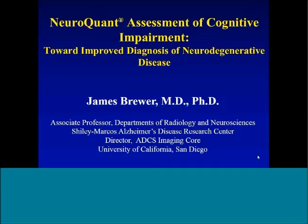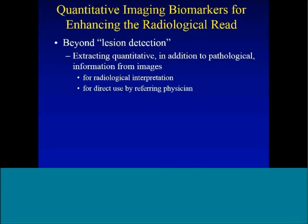We feel strongly that there's a component of the radiological read that's typically missing when a neurologist or other specialist gets a report back from radiology — one that mainly focuses on lesions and does not focus on neurodegeneration. Particularly with elderly patients coming in with cognitive impairment, one of the first branch points is to say whether this is a worried well patient or a true cognitive impairment that may be due to neurodegeneration.